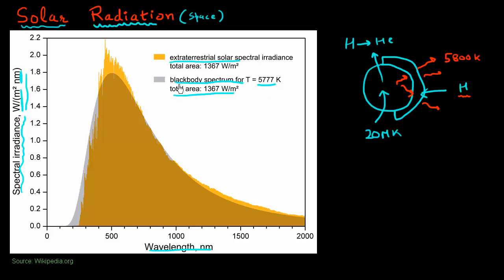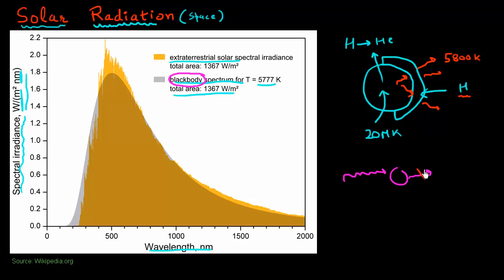To the first order, we can approximate the sun as a black body spectrum. So the first question to ask is: what is a black body? A black body is a body which absorbs all incoming radiation. If we have an object and we have incoming radiation, a black body is one in which there is no outgoing radiation — it essentially absorbs all the radiation incident on it.